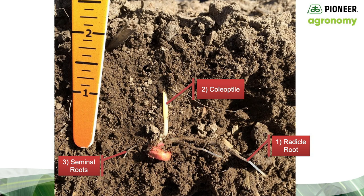Now to the process. When diagnosing below-ground plant tissue, it's important to know the order in which plant parts develop. First, the radicle root emerges first, near the tip of the kernel, within two to three days in warm soils, or much longer if soil temperatures remain less than 50 degrees. In cooler or drier soils, the radicle root may not emerge until one to two weeks after planting.